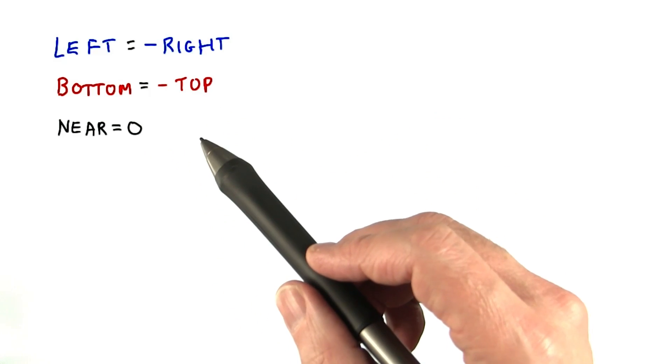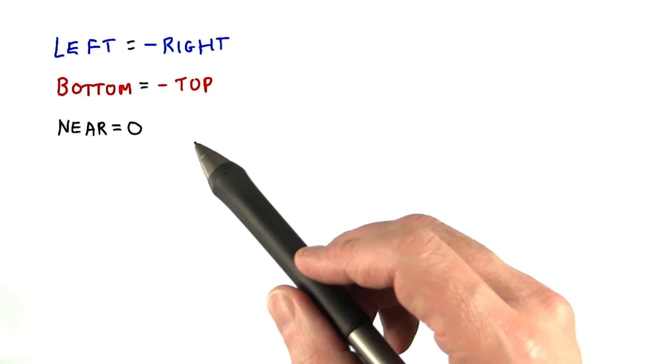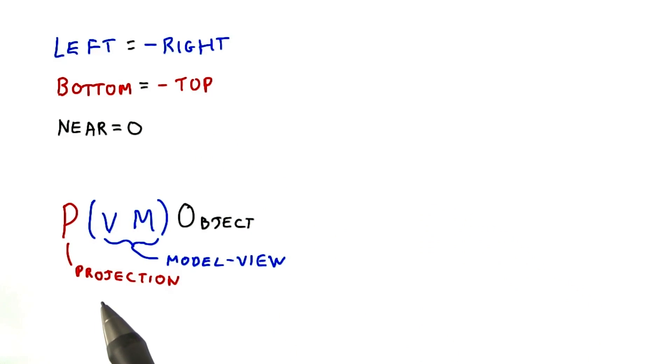The idea is that the view matrix moved everything in the world to be placed relative to the lens of our camera. Creating the orthographic camera itself makes a projection matrix. The box defined by the projection matrix is then in front of the camera and symmetric around its view axis.